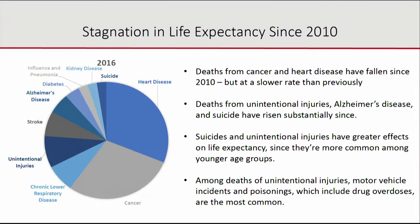Simultaneously, deaths from unintentional injuries and suicide have risen quite substantially. Alzheimer's disease has gone up partly because people are not dying of heart disease and cancer, so they're dying somewhat of Alzheimer's. Suicides and unintentional injuries have big effects on life expectancy because they are more common among younger age groups. So a given percentage point increase in the suicide rate or the unintentional injury rate will tend to have a bigger impact on life expectancy than the same increase for heart disease or cancer.